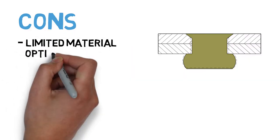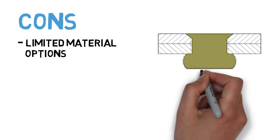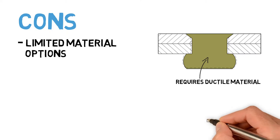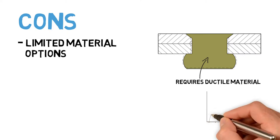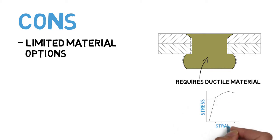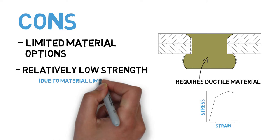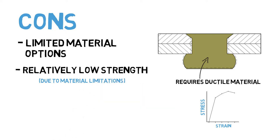The range of materials that can be used for rivets is rather limited. Because riveting relies on plastically deforming the fastener itself, we are limited to lower strength and highly ductile materials. As a result, rivets tend to be significantly weaker than threaded fasteners, limiting their use in certain applications.